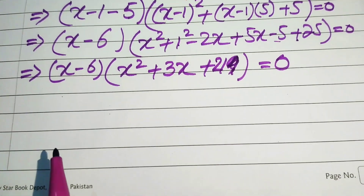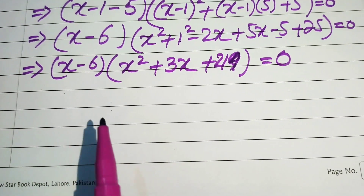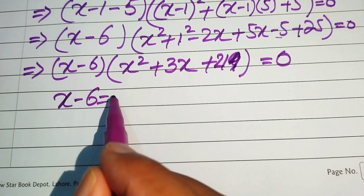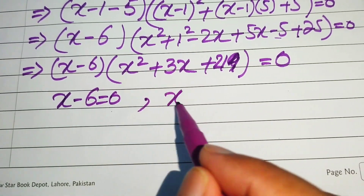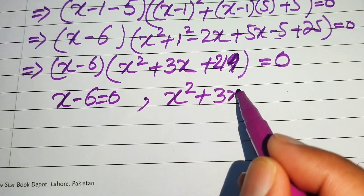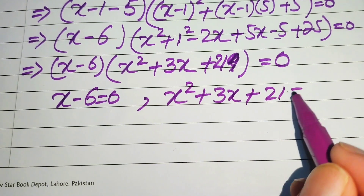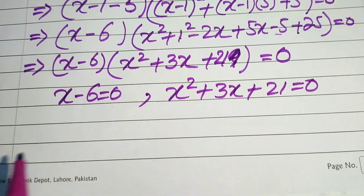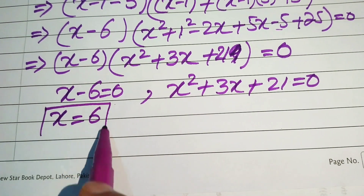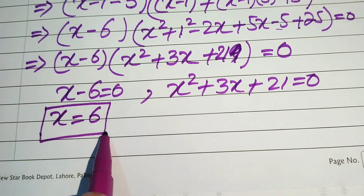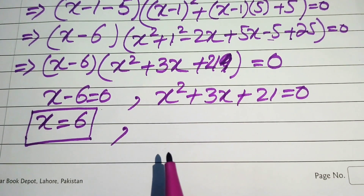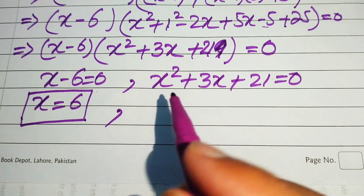We now split this into two sub-cases. The first sub-case is x minus 6 equals 0, which immediately gives x equals 6. The second sub-case is x squared plus 3x plus 21 equals 0, which we solve using the quadratic formula.